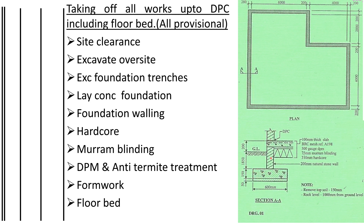After the walls are built, we return the soil, then lay and compact the hardcore. On top of the hardcore we do the maram blinding to fill the spaces and prevent concrete from entering the hardcore voids. Then we apply the anti-termite treatment, followed by the DPM — the damp proof membrane, which is a polythene sheet. After the DPM, we lay the concrete. Before that, formwork is placed all around the building to support the concrete in place.